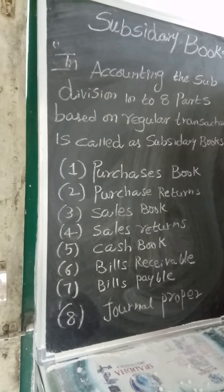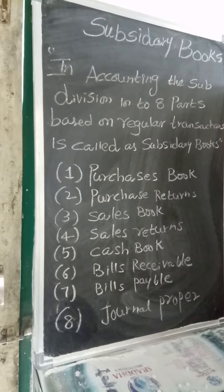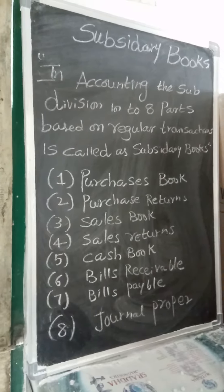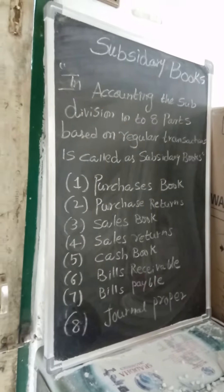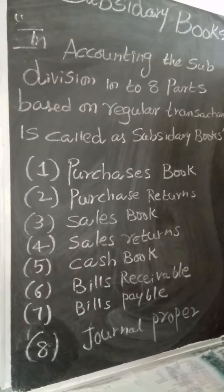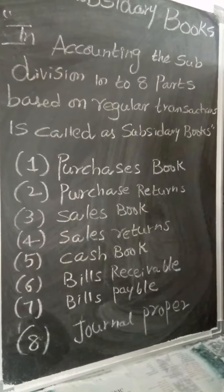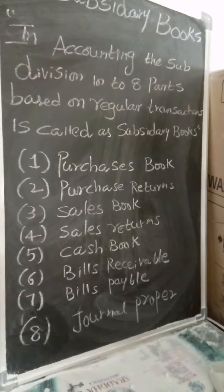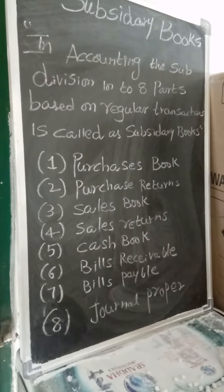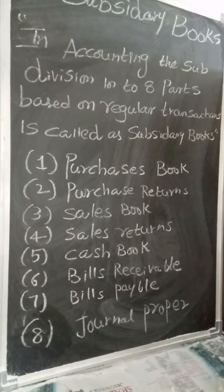The purchases book is used to record only credit purchases of goods. No cash purchases are recorded, and no purchase of assets will be recorded. If you are a dealer in air coolers, then the purchase of air coolers will become stock. If you are not a dealer, the purchase of an air cooler will be treated as an asset. Here, only credit transactions are recorded.